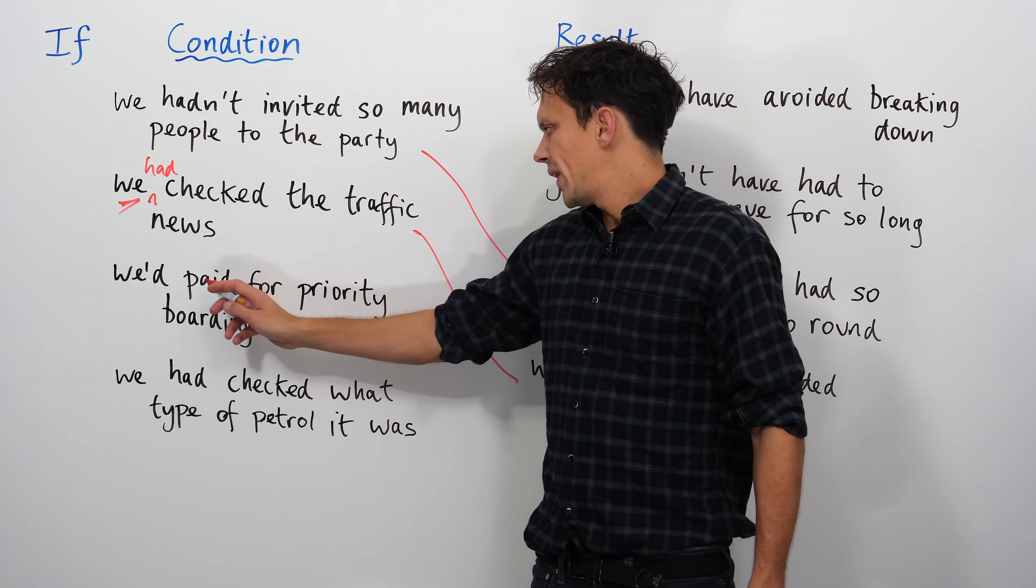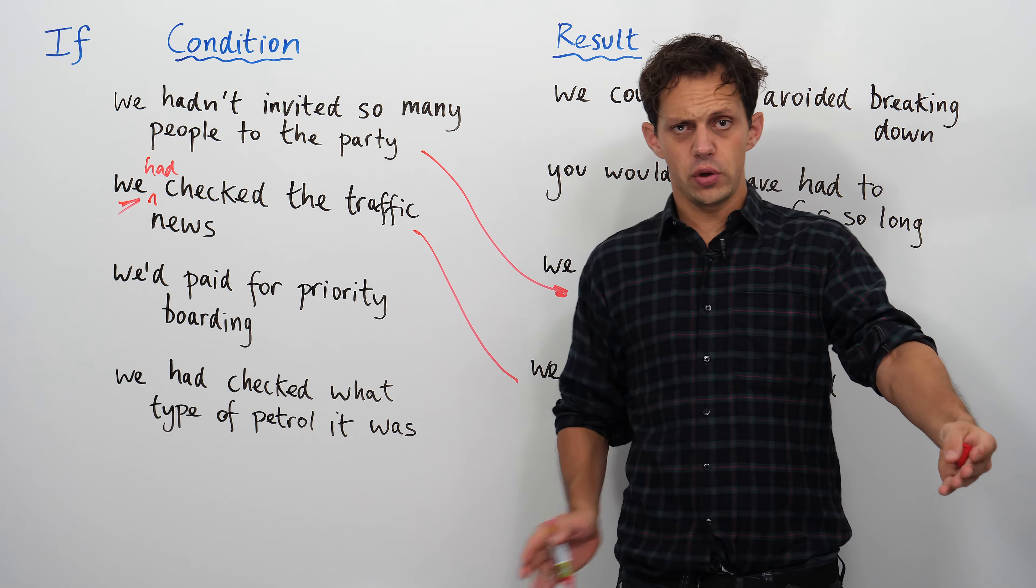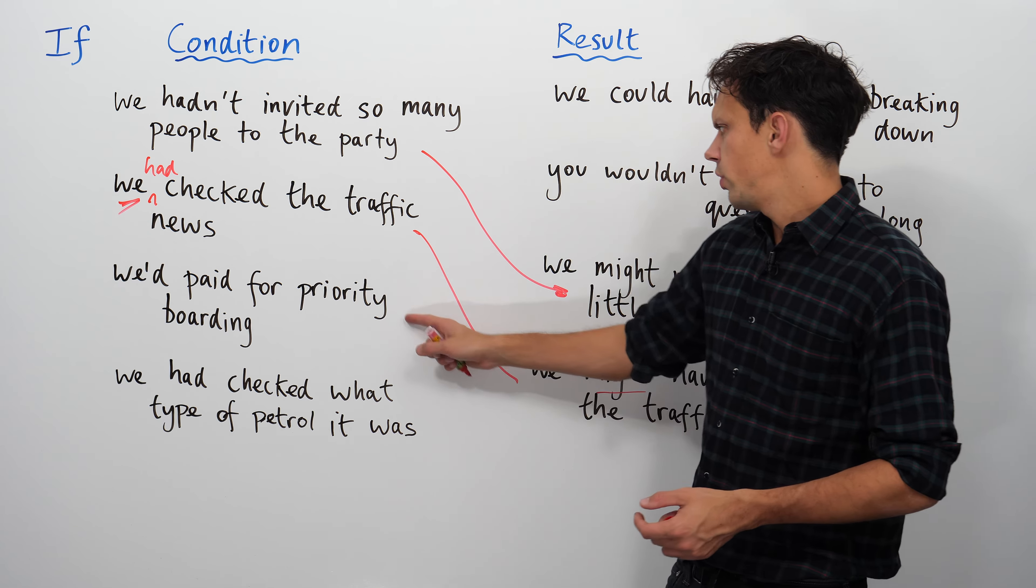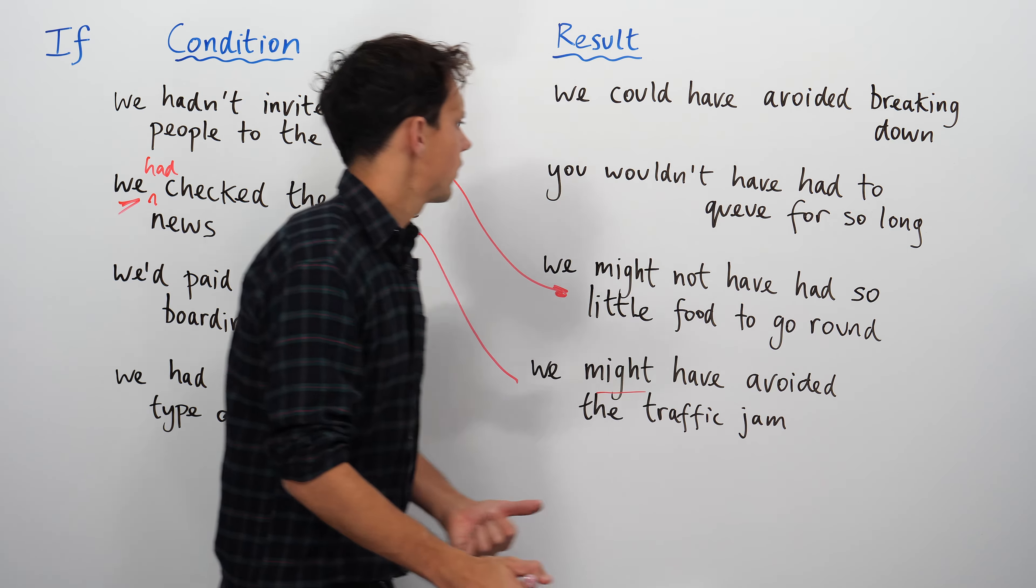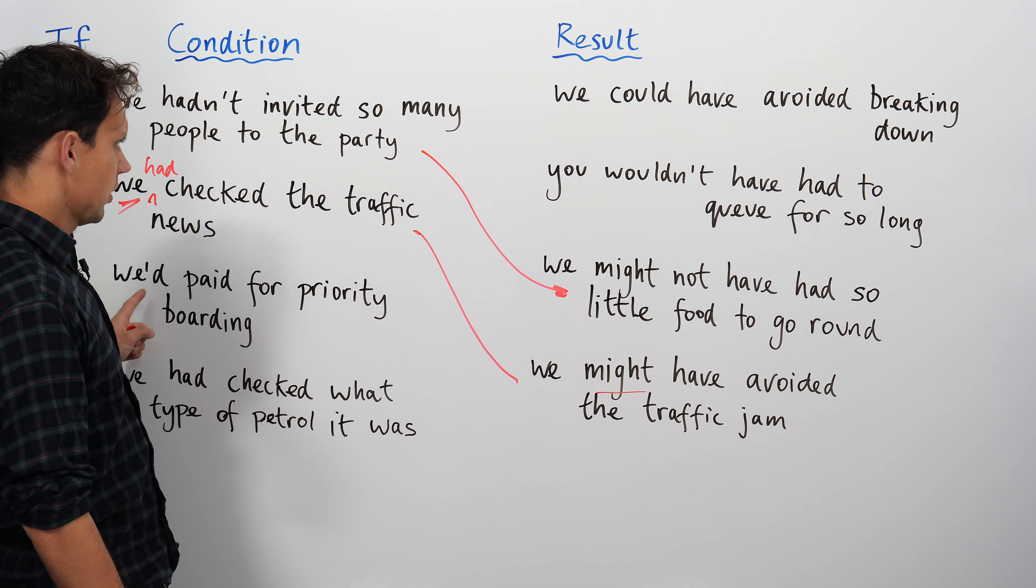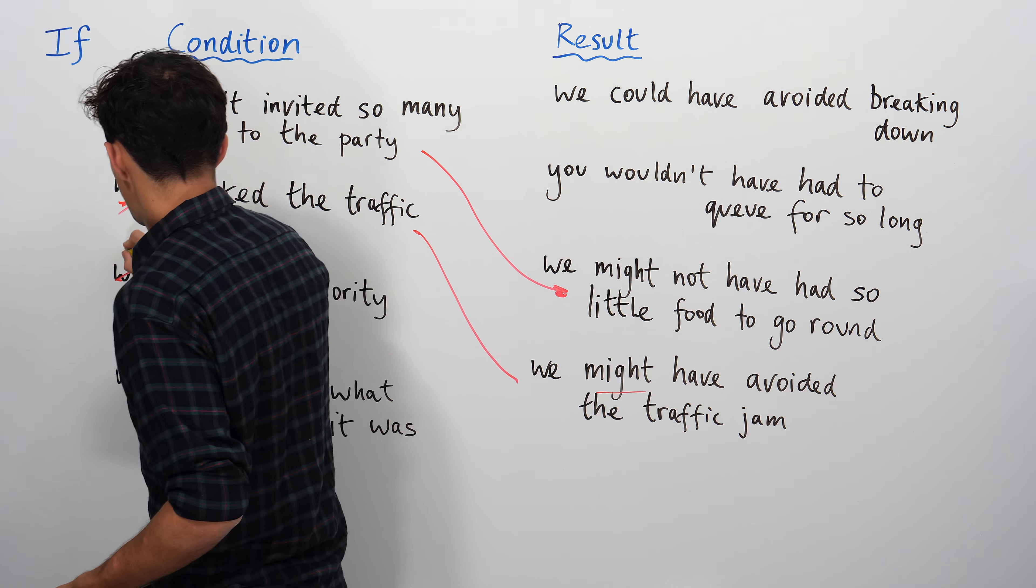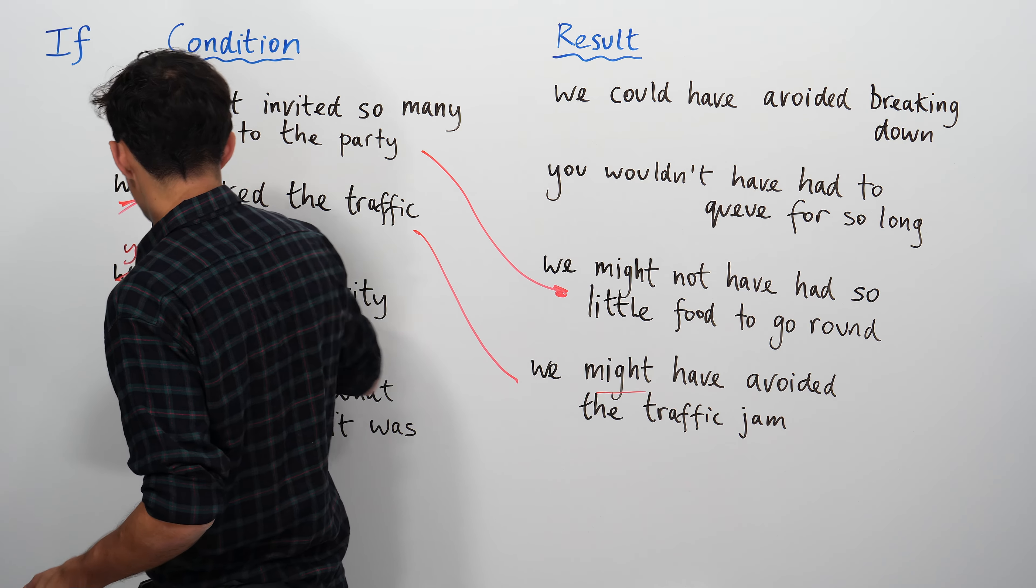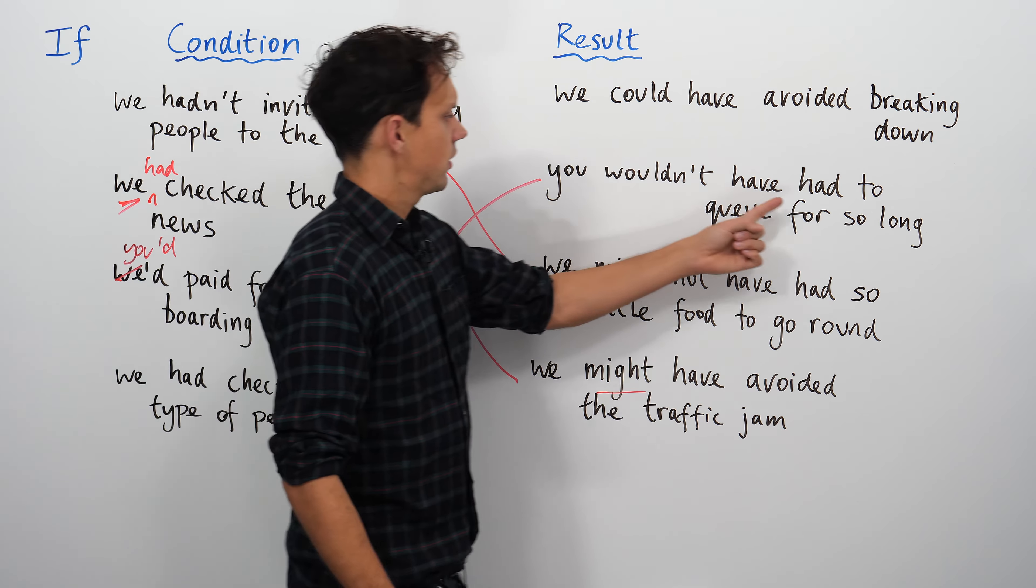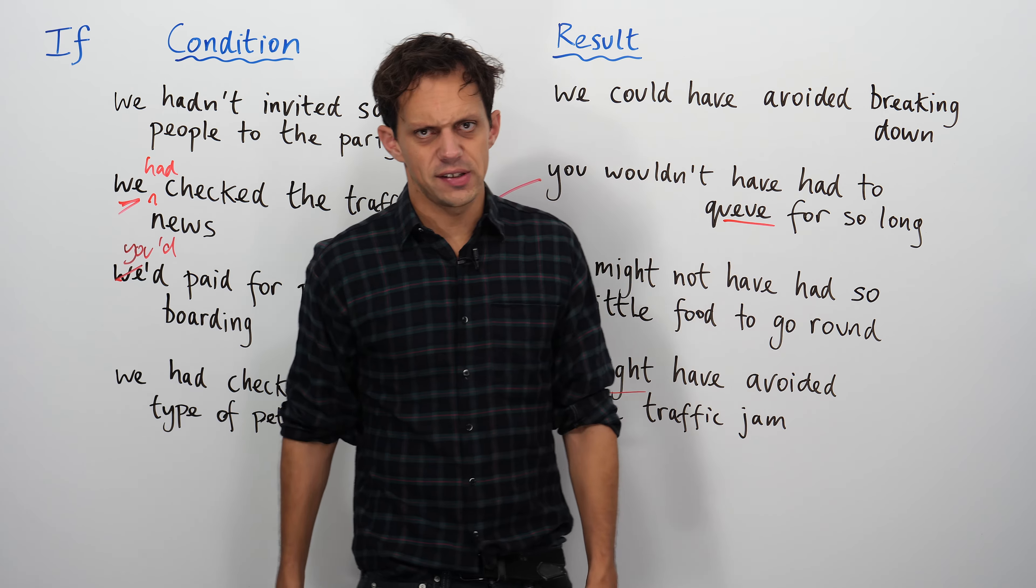Next one. If we'd paid for priority boarding, so that's the premium service where you go to the front of the queue, or at least you're meant to. What would have been different? If we had paid that... You... Ah, so we've changed it, haven't we? We've changed the subject, so we need to make the subjects agree. So let's change this to you'd. If you'd paid for priority boarding, you wouldn't have had to queue for so long. To queue. To queue. Interesting spelling, isn't it?